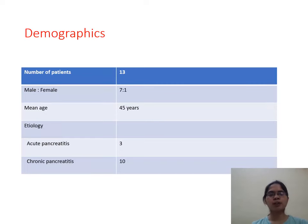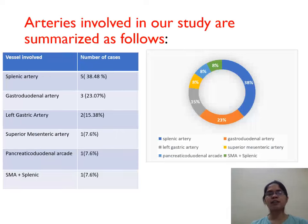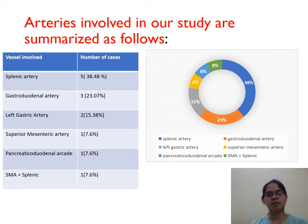Demographics: Total number of patients was 13. Male to female ratio was 7 to 1. Mean age of patients was 45 years. Three patients were of acute pancreatitis whereas the rest were of chronic pancreatitis. Arteries involved: splenic artery in 5 patients, gastroduodenal artery in 3 patients, left gastric artery in 2 patients, splenic and superior mesenteric artery in 1 patient, pancreaticoduodenal artery in 1 patient, and superior mesenteric plus splenic artery in 1 patient.